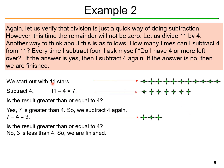We're going to start out with 11 stars. Subtract the divisor, which is 4. 11 stars take away 4 stars, and we have 7 stars left. Is the result of 7 greater than or equal to 4? Yes, 7 is larger than 4. So, we subtract 4 more stars. 7 stars minus 4 stars equals 1, 2, 3 stars.